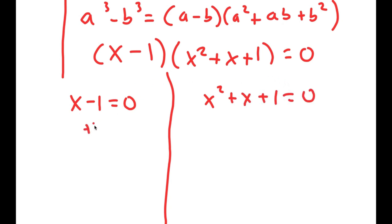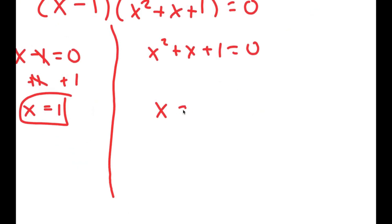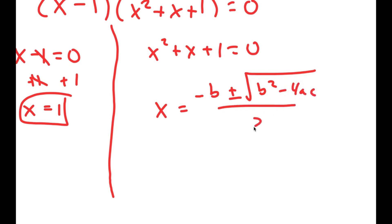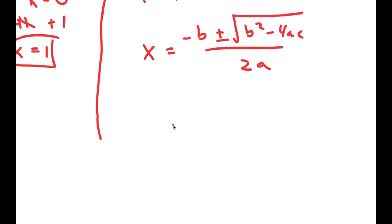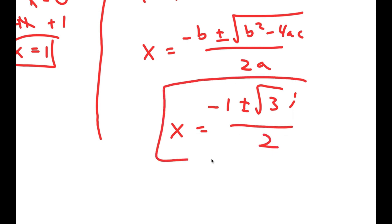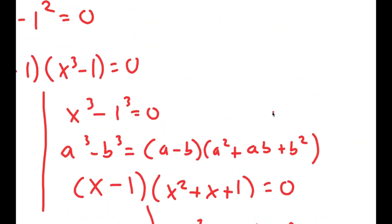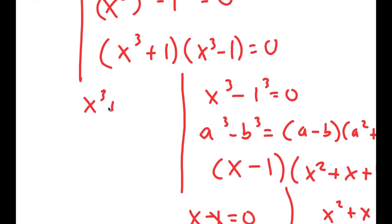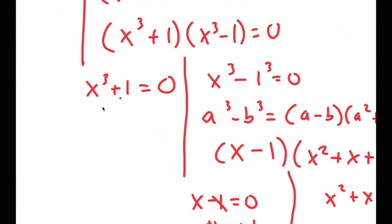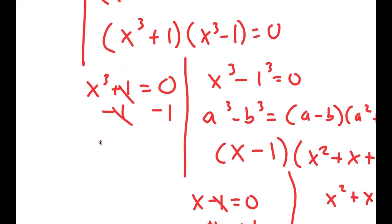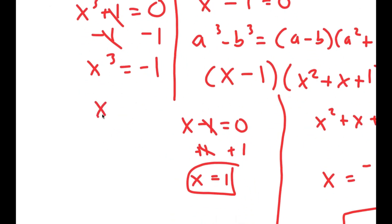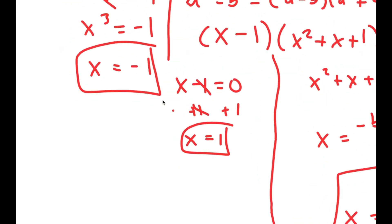For x minus 1 equals zero, I just add 1 to both sides and get x is equal to 1. For x squared plus x plus 1 equals zero, I can use the quadratic formula, and I get x is equal to negative 1 plus or minus the square root of 3 times i, over 2. So these are two more solutions. Now for x to the power of 3 plus 1 equals zero, I subtract 1 on both sides to get x to the power of 3 equals negative 1, meaning x is also equal to negative 1.